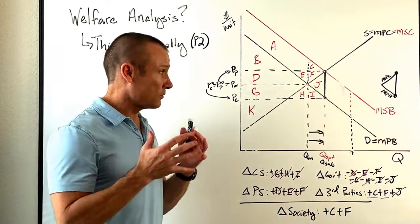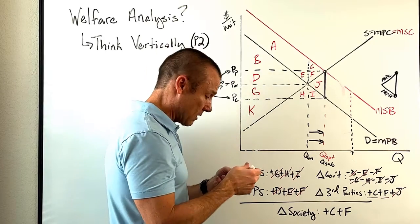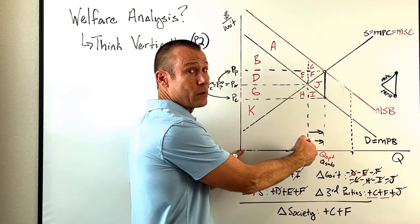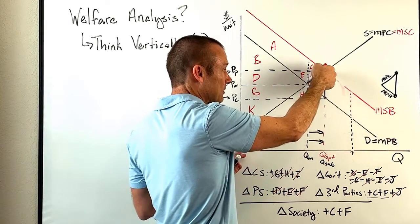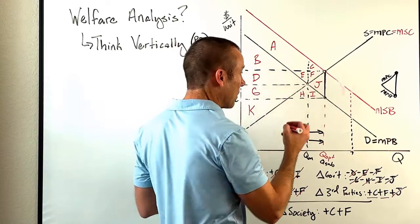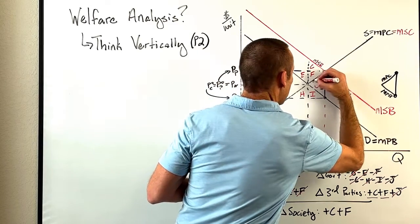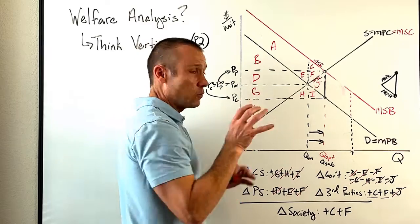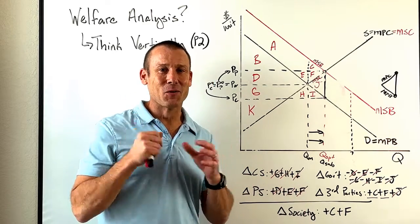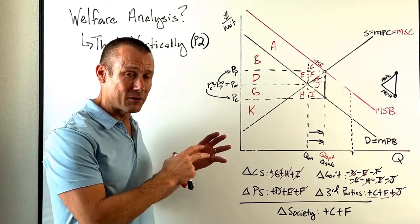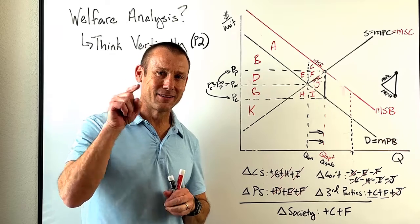Just before we wrap up - if we didn't intervene, what would the deadweight loss have been? We'd produce only to Q-market. Drawing a vertical line up, the Q-optimum was where the S curves intersected. The MSB line and MSC line form a triangle - the deadweight loss without intervention would have been C and F. But because we intervened with the subsidy, we recovered those. If you watched part one and part two, you are going to be a master at welfare analysis. Remember: think vertically. Have a good day.